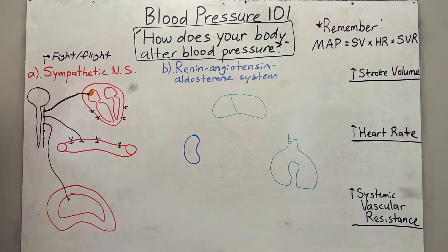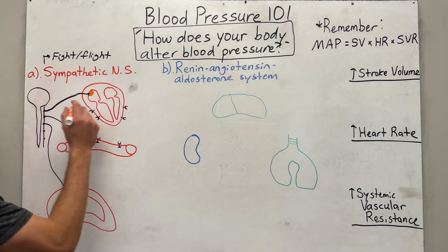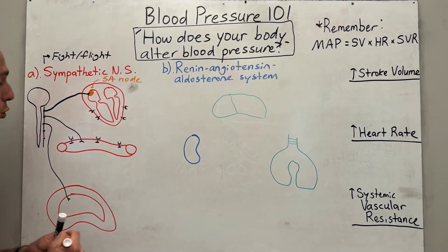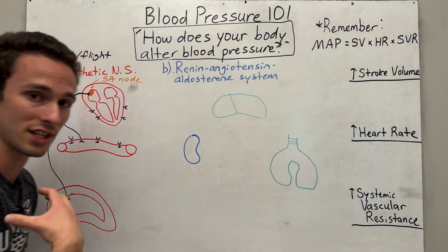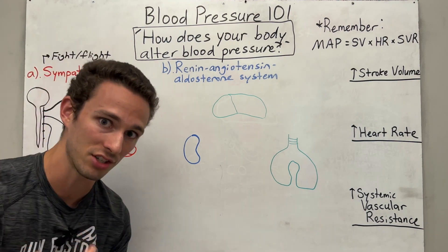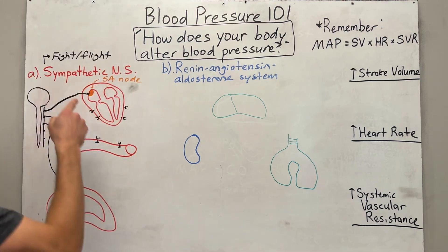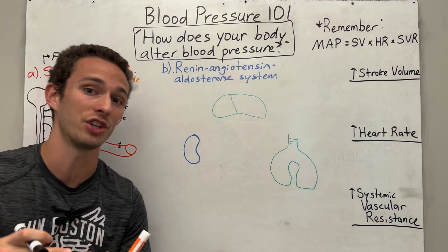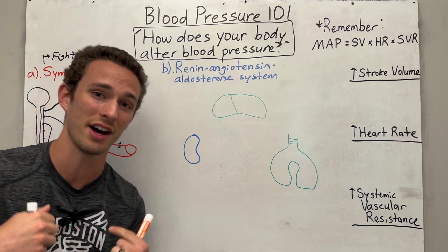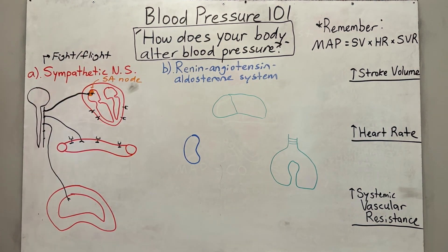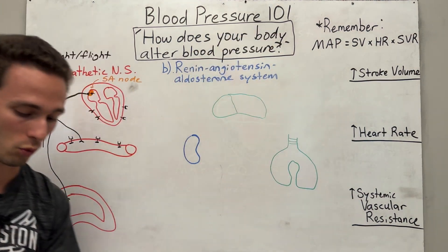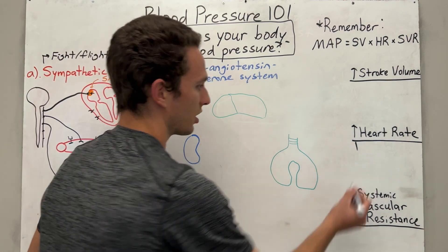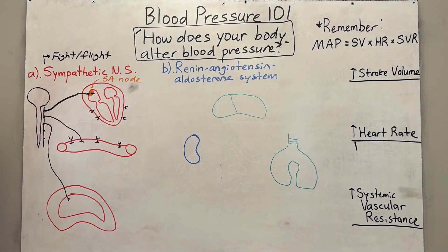When the sympathetic nervous system talks to the SA node — remember the SA node is the pacemaker of your heart, determining when the muscles in the heart contract to make your heart beat — it will stimulate it to depolarize, to get electrically charged faster and faster, thus raising your heart rate. So we've got one check for raising heart rate — the sympathetic nervous system will do that, thus raising blood pressure.